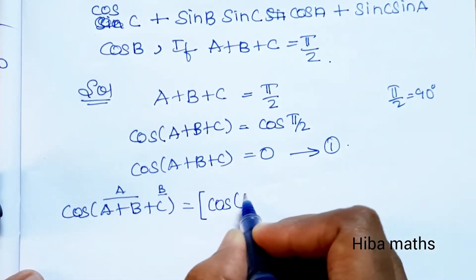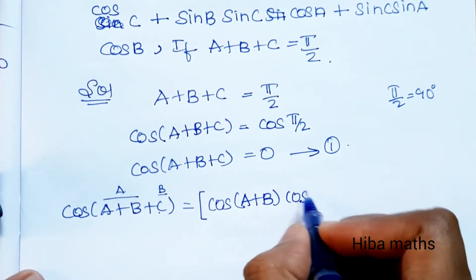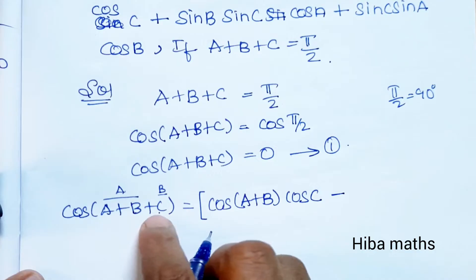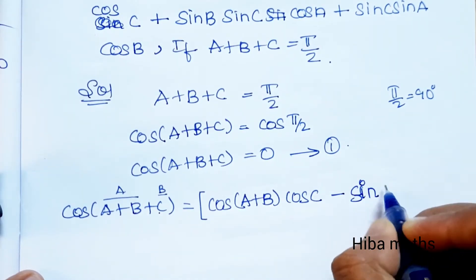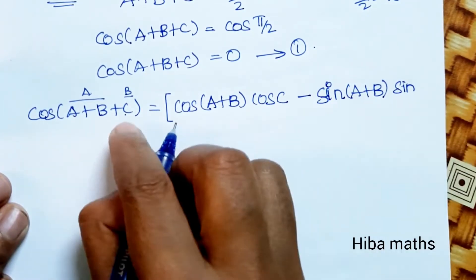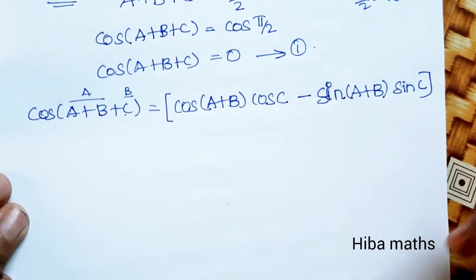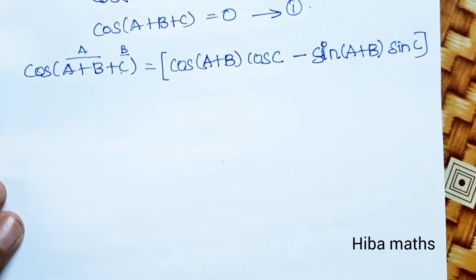Cos(A+B+C) equals cos(A+B) cos C minus sin(A+B) sin C.